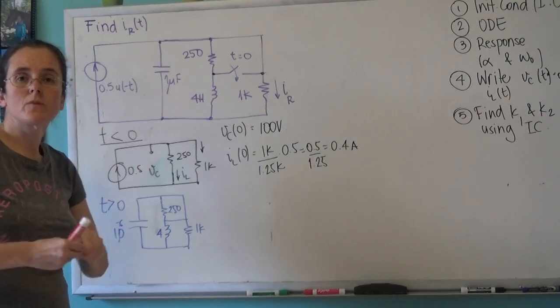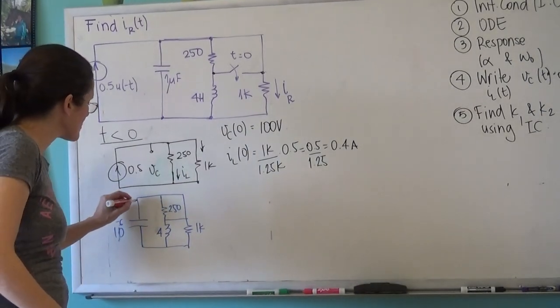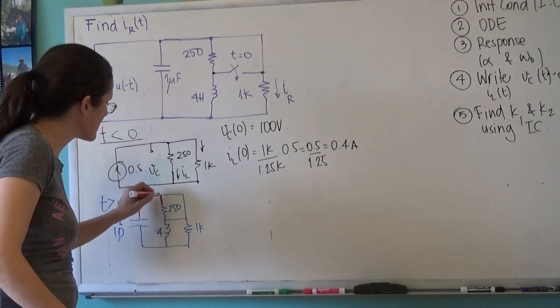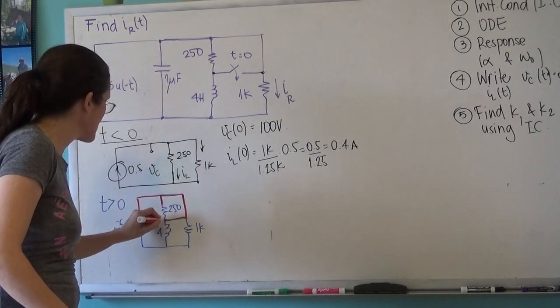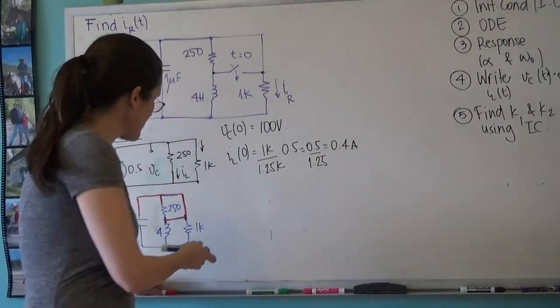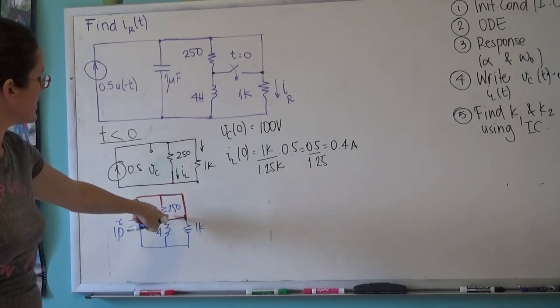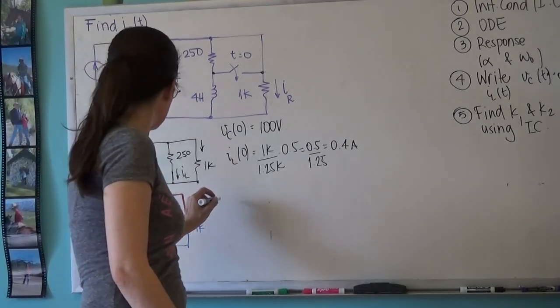I hope you see that this is a two node circuit. Watch: this is a node, it's a node, it's a node, and it's a node. So now there's ground and there's a red node.